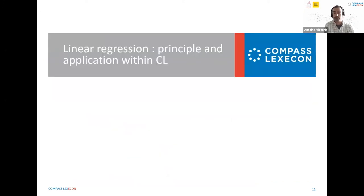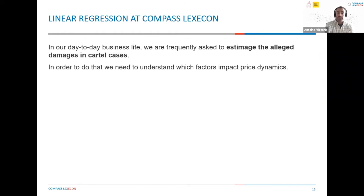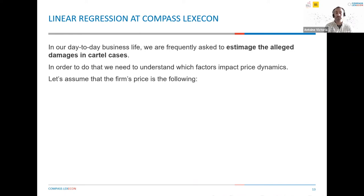Now let's get into the core of the subject, which is linear regression — both as a matter of principle and, most importantly, the way we apply it within Compass Lexicon. Taking again the example of cartel prices: we are asked by competition authorities and by companies to estimate the alleged damages of cartel cases. We need to understand the price dynamic, and we do so by assuming a functional form. On that equation, you have the output P — the price of the product — and we assume, based on economic theory, that the price dynamic is influenced by the variable C, which is variable costs.